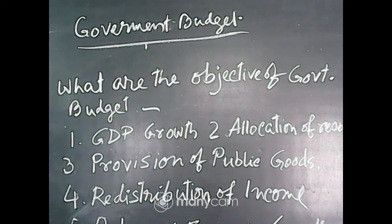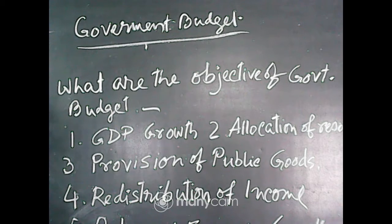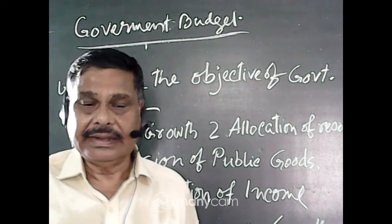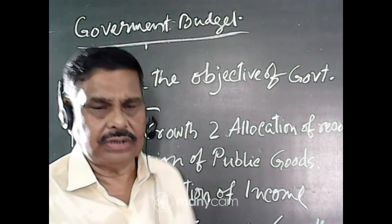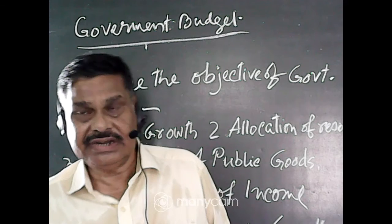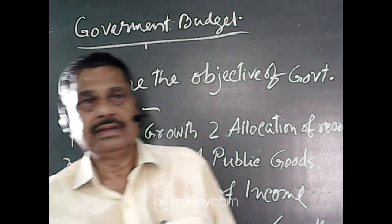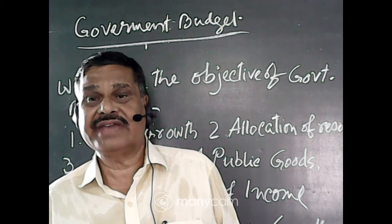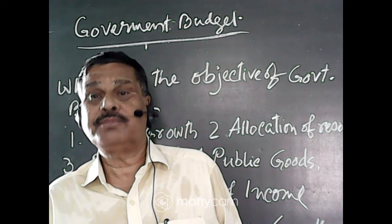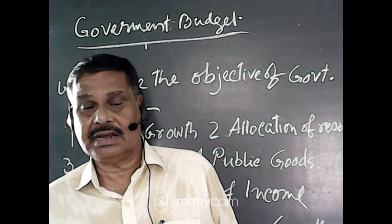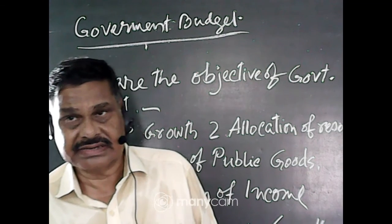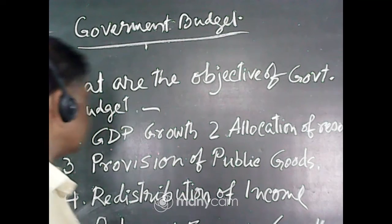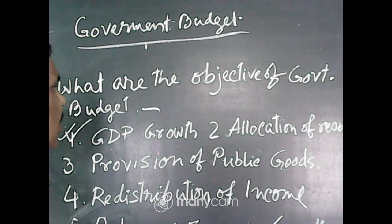GDP means Gross Domestic Product. The development of a country mostly depends on the growth of GDP. If GDP does not grow more and more, economic development cannot take place. GDP depends on the production of different sectors — agricultural sector, industrial sector, service sector, etc. GDP growth is a crucial point in connection with the objective of the government budget.